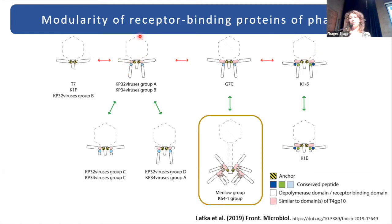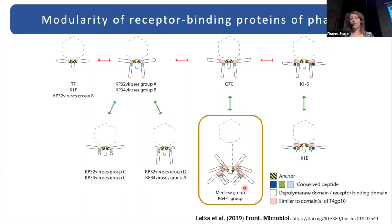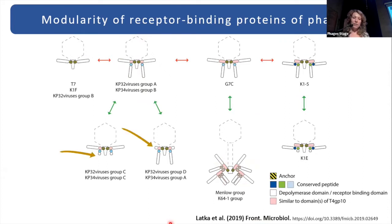This evolution can go even further. There are already Klebsiella phages described with multi-capsular specificity, and their RBP system is very complex. If any of you has such a Klebsiella phage with multi-capsular specificity in your collection, I would be very interested — please let me know. Evolution can also go in other directions: we see phages that lost the part of the RBP responsible for host recognition and consequently lost capsular specificity to a particular capsular serotype.